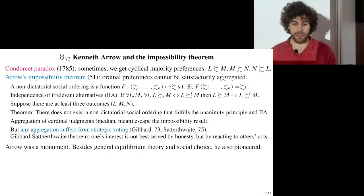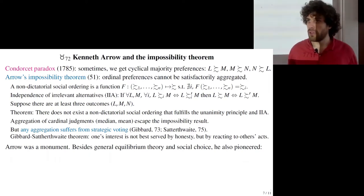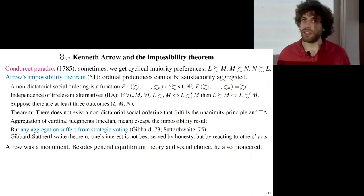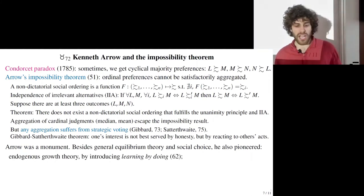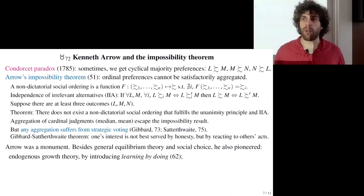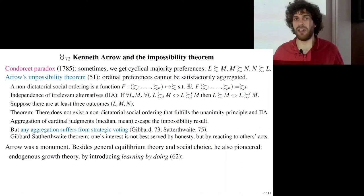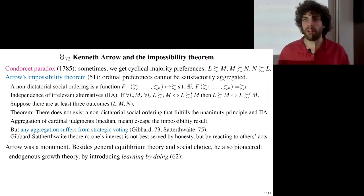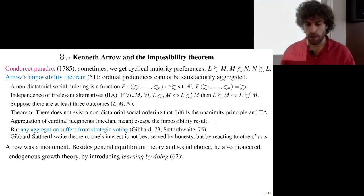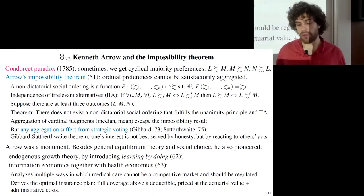Besides social choice and general equilibrium theory, Arrow also revolutionized economics in other ways. He was a precursor of endogenous growth theory, introducing the concept of learning by doing, which explains increasing returns to scale when an industry is nascent. This justifies why governments should subsidize new industries like solar panels — because they will learn quickly and costs will fall.